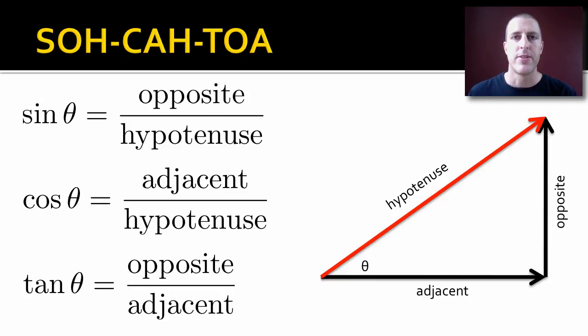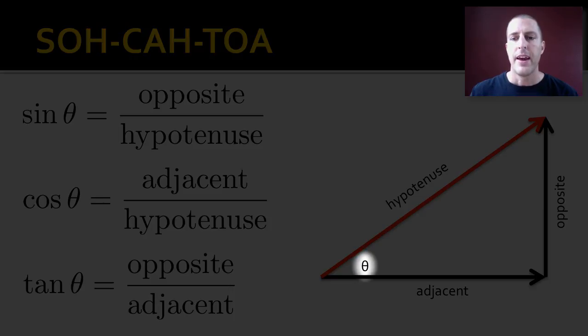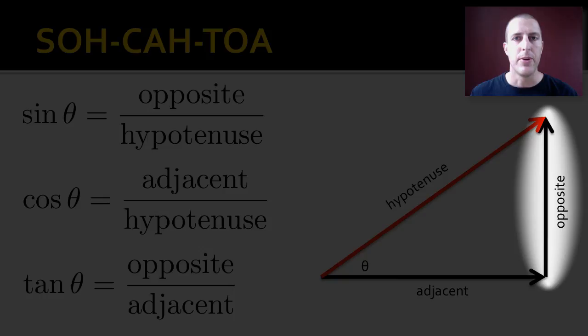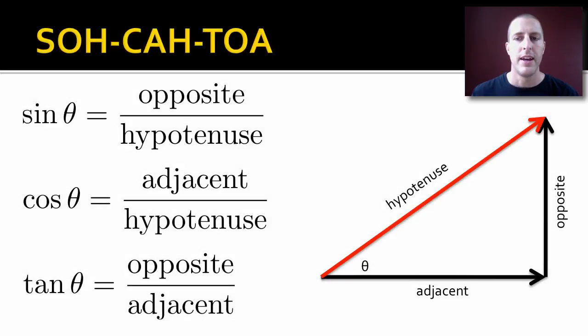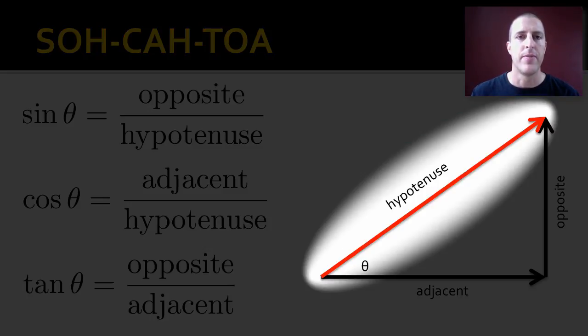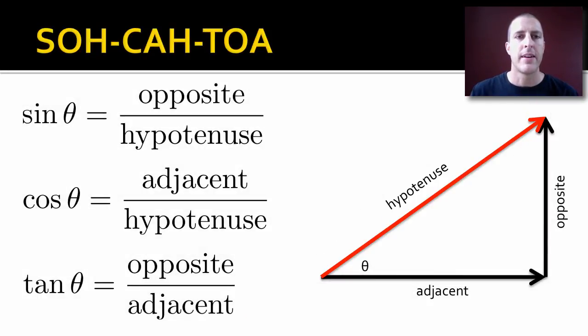Our three trig functions: sine is opposite over hypotenuse, cosine is adjacent over hypotenuse, tangent is opposite over adjacent. You can see on the right triangle here that we have our angle theta. The leg that is opposite the angle theta we label opposite. The leg that is touching our angle theta we label adjacent. And our hypotenuse is the hypotenuse of the right triangle. An easy way to remember that is SOHCAHTOA: sine is opposite over hypotenuse, and you can figure the others out.